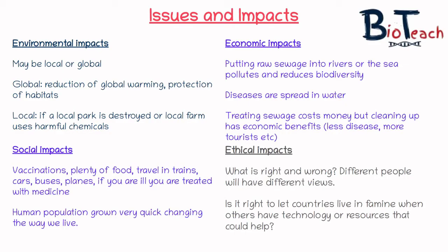Lastly, you've got ethical impacts. The word ethical normally relates to what's right and wrong. Different people are going to have different views depending on lots of factors. For example, one topic that comes up quite a lot is whether it's right to let countries live in famine when others have technology or resources that could help, or when we have an abundance of food — something like that might come up in a genetic engineering of food topic.